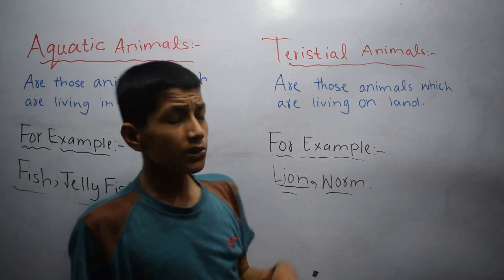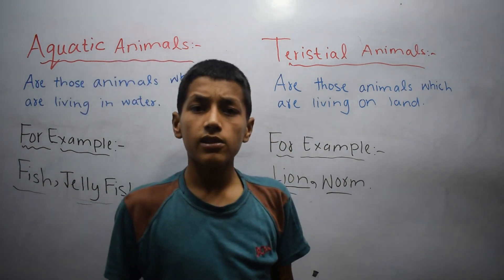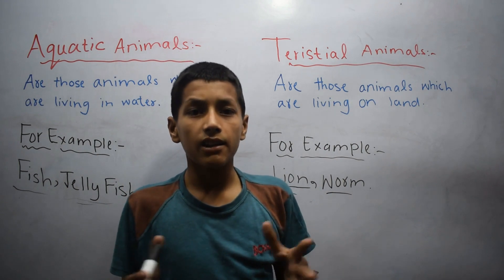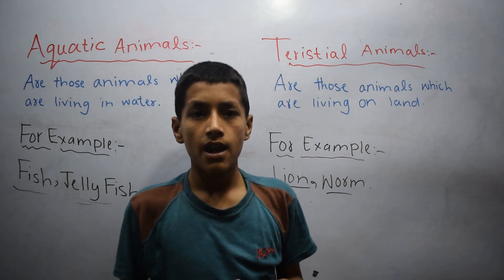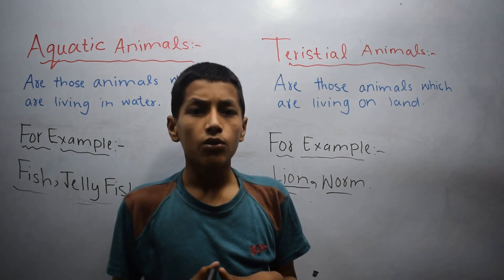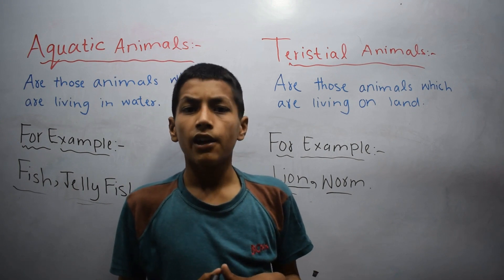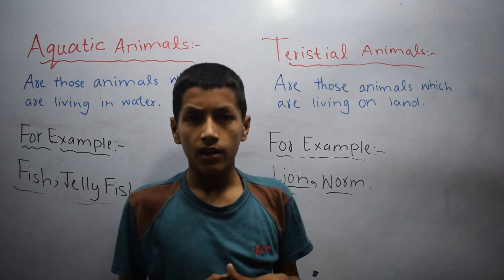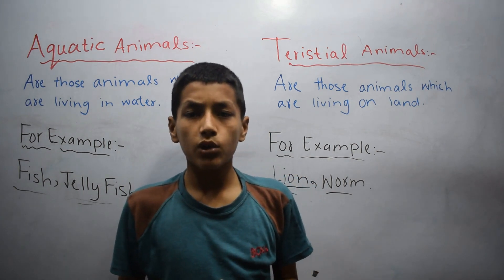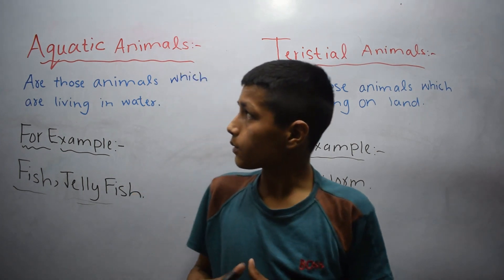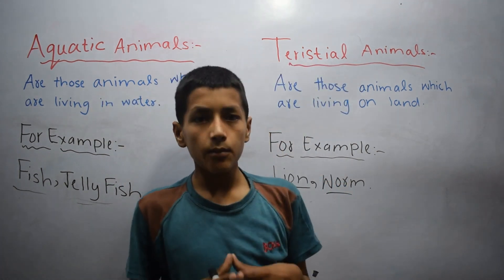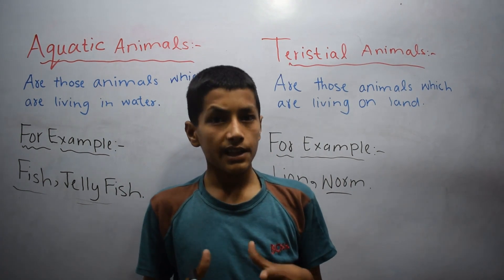The skin of terrestrial animals is hard. Terrestrial animals can breathe through lungs and trachea. So this was all about the difference between aquatic animals and terrestrial animals. Thanks for watching.